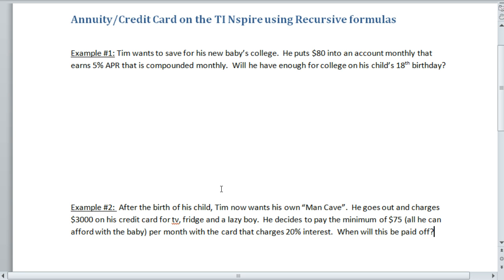The first example we want to look at is an annuity. It's the concept that we put regular payments in or get regular payments out. Tim wants to save for his new baby's college. He puts $80 into an account monthly that earns 5% APR that is compounded monthly. Will he have enough for college on his child's 18th birthday?